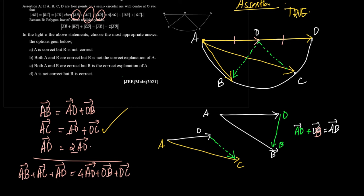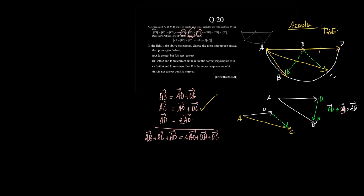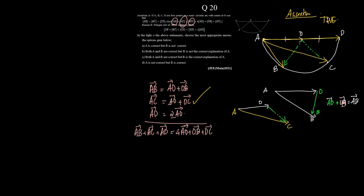Now, let us discuss about the reason. The reason says vector AB plus vector BC plus vector CD is equal to, not modulus, is equal to AD is equal to 2 AO.